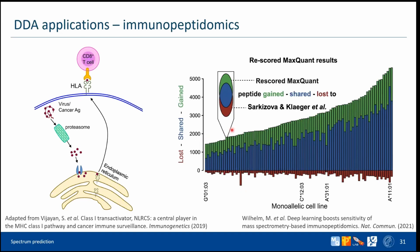A trained model can yield very good results. For example, in this work, Matthias Wilhelm et al. reprocessed a dataset consisting of HLA class 1 peptides from 95 monoallelic cell types using the PROSIT model with rescored PSMs. On this plot, you can see green bars for peptides gained, red bars for peptides lost, and blue bars for shared peptides. Overall, they were able to achieve on average a 1.5-fold improvement in terms of identified proteins. Similar scoring studies also suggest that integration of spectrum prediction can benefit immunopeptidomic studies.